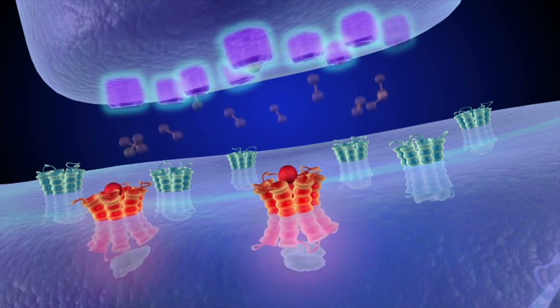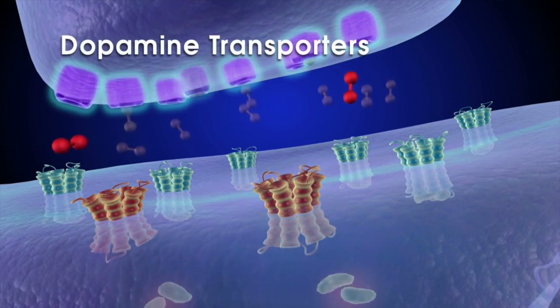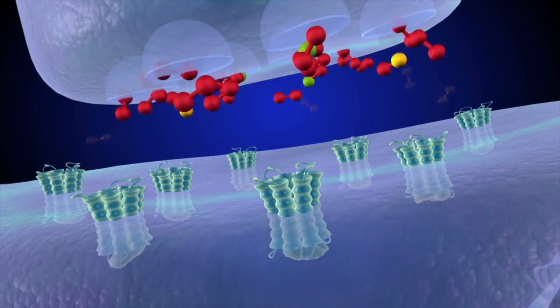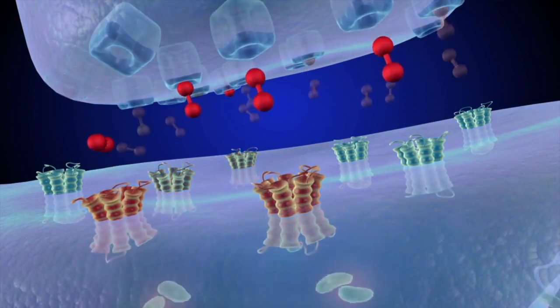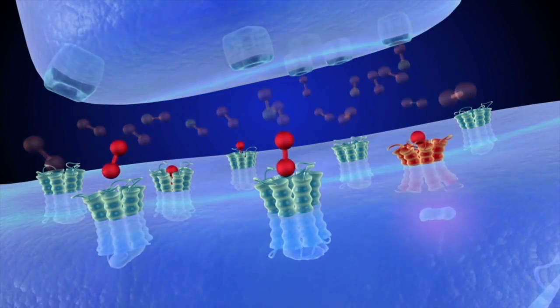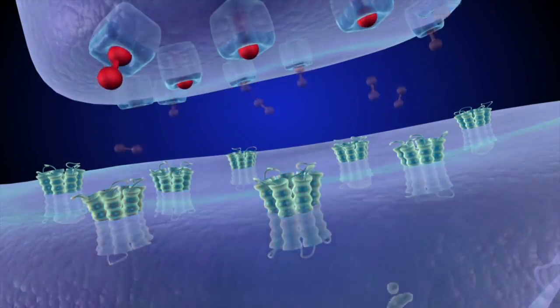Some dopamine molecules re-enter the sending cell via dopamine transporters and can be re-released. When a reward is encountered, the presynaptic cell releases a larger amount of dopamine in a sudden burst. Dopamine transporters will then quickly remove the excess.